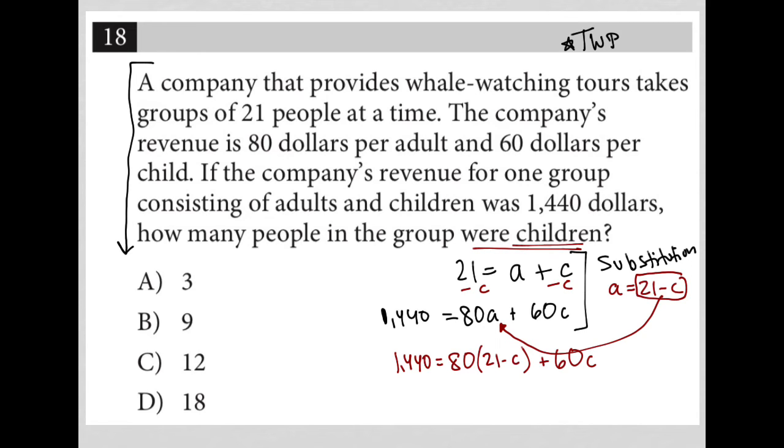Although, like I said before, you can definitely use elimination instead. Now, all I need to do is calculate 80 times 21, which is 1,680. So I have 1,440 equals 1,680 minus 80C plus 60C.